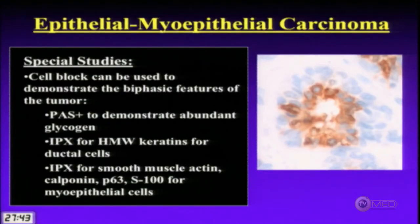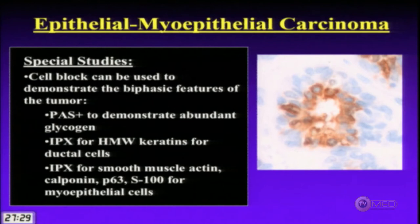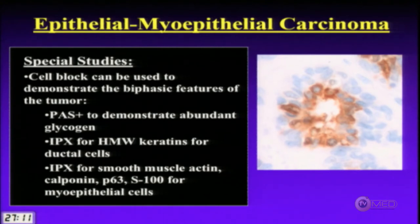For ancillary studies, you can use high-molecular-weight keratins and EMA to stain the ductal cells, or use myoepithelial markers — smooth muscle actin, calponin, P63, or S100 — to differentially stain the myoepithelial cells while leaving the ductal cells unstained.